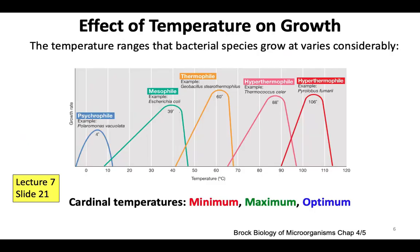Next, you need to remember different classes of organisms based on environmental factors. For temperature, you should be able to identify: psychrophiles, mesophiles, thermophiles, and hyperthermophiles. For example, psychrophiles are organisms capable of growth and reproduction in low temperatures ranging from -20 to +10 degrees Celsius. Mesophiles grow best at moderate temperatures, with an optimum growth range from 20 to 45 degrees Celsius.